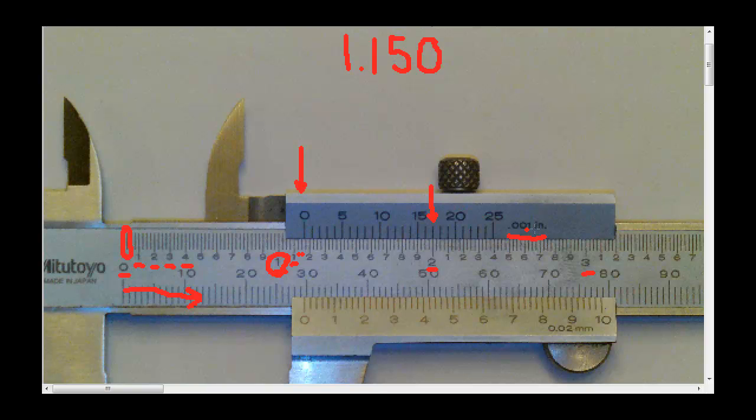And it looks to me like we're looking at two graduations past the 15. So each one of these graduations is 1 thousandth of an inch. So two graduations past the 15 should be 16, 17. In this case, it would be 0, 1, 7,